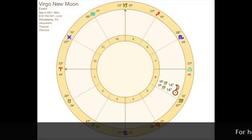So, this is Sun, Moon, and I'm using Chiron to represent Virgo for this Virgo New Moon.